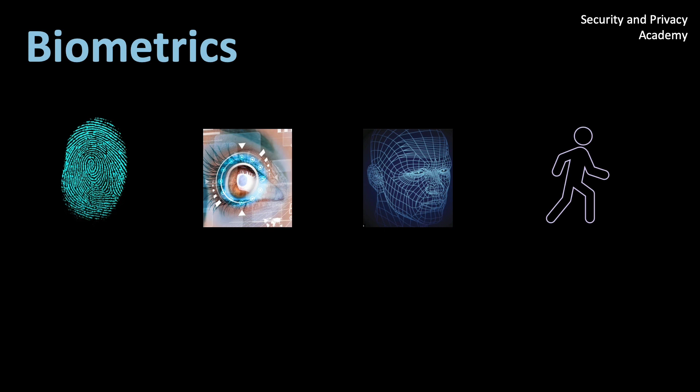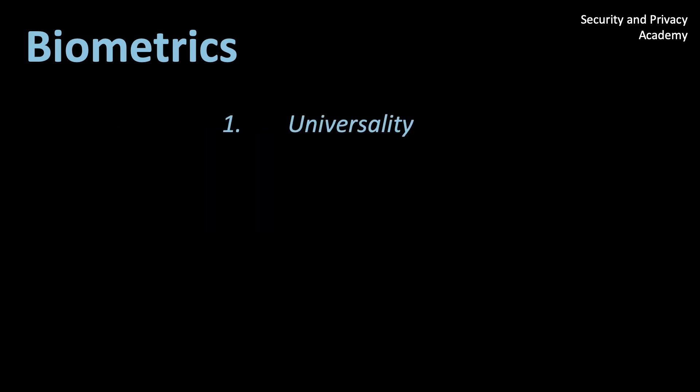A biometric feature can be used for authentication if the following conditions are fulfilled. A feature needs to be universal. For example, you cannot use retina scanners that only work for blue-eyed people. Also think about people in wheelchairs if you want to implement gait detection. It also needs to be unique. Authenticating someone by the color of their hair is probably not very unique. Their fingerprint, however, is.